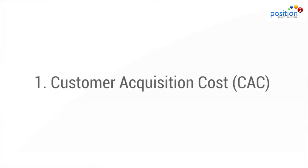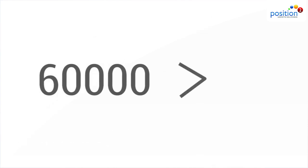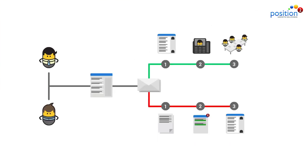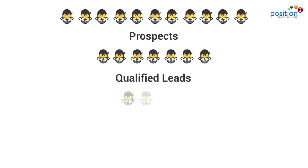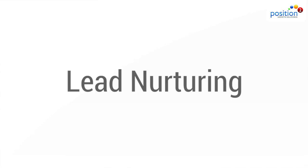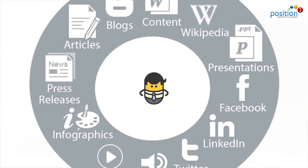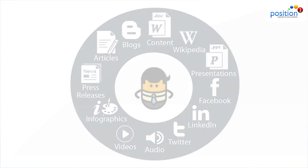Number one: customer acquisition cost, or CAC. This is inclusive of all spending including sales, marketing, salaries, media spend — the whole thing. If this number is too high, you need to look at the sales process at length and the sales labor cost associated with it. You may need to more clearly define what a qualified lead is and change who does the nurturing. Marketing should look to provide more targeted and segmented content to nurture and shorten the sales cycle.